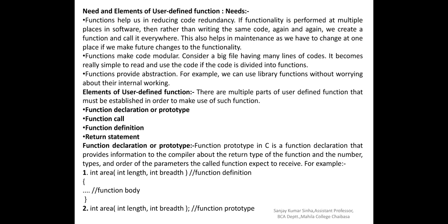Consider a big file having many lines of code — it becomes really simple to read and use the code if the code is divided into functions. That is the second need. The third need is: functions provide abstraction. For example, we can use library functions without worrying about their internal working. We simply include the header file and use the function below — this is how abstraction works.